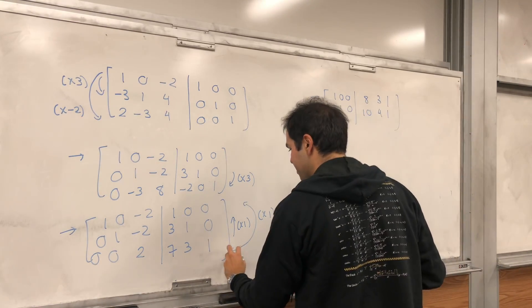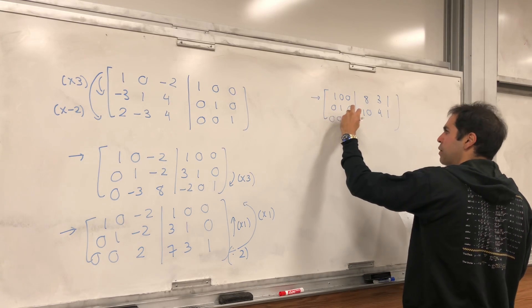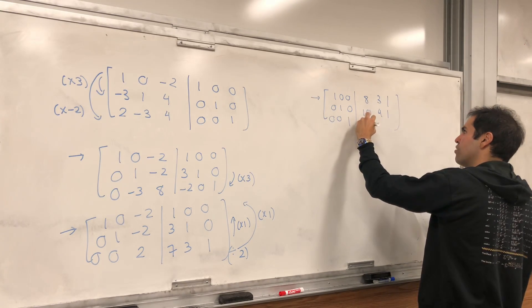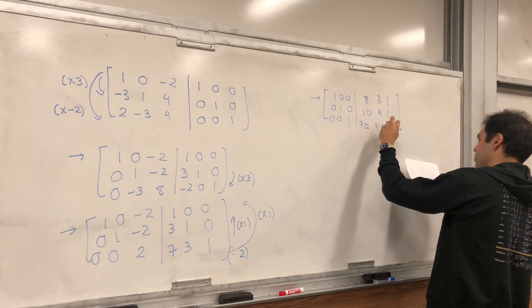and then if you'd like, you can just divide this row by 2, and then we get 0, 0, 0, 1, and then 7 thirds, sorry, 7 halves, 3 halves, 1 half.